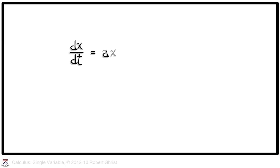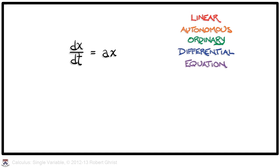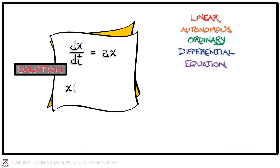This is the subject of today's lesson: dx/dt equals a times x, where a is a constant. This is a linear, autonomous, ordinary differential equation.